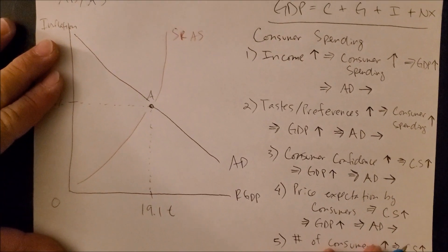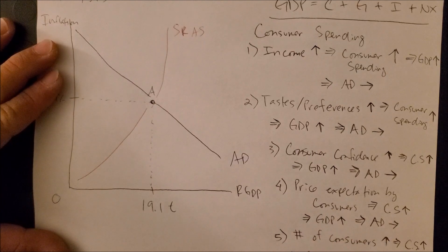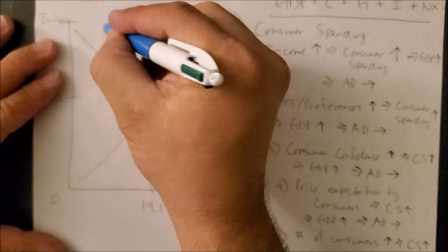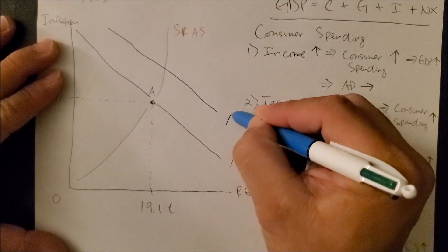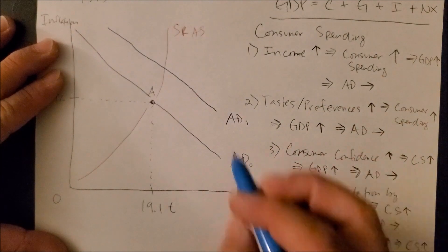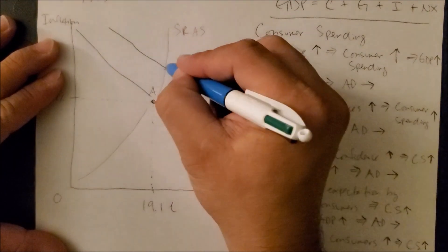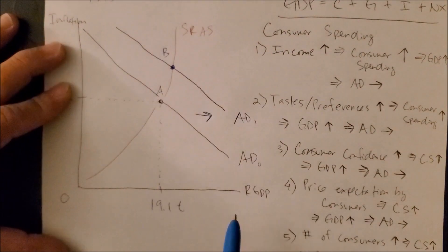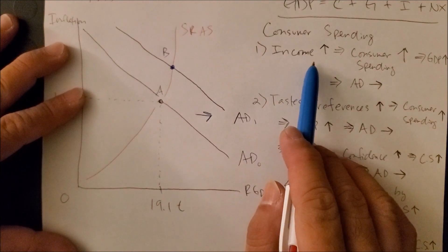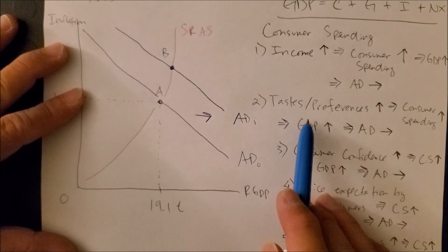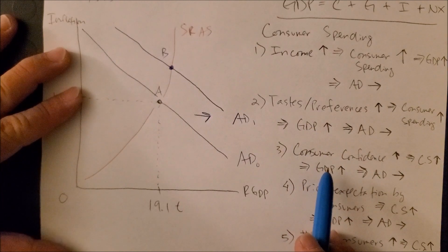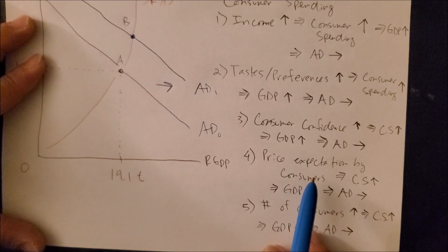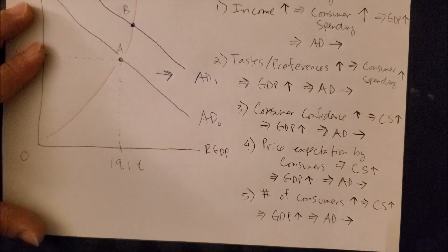And now back to our AD/AS model, we can see that once any of these five takes place, we can now draw a new AD curve to the right. We can call this AD1, AD0, and show the shift to the right. And now we have a brand new equilibrium point at point B. All because of a higher income, all because of more tastes and preferences, all because of a stronger consumer confidence, all because we expect the price of a good market to increase at a future date, all because there are more consumers entering the market.